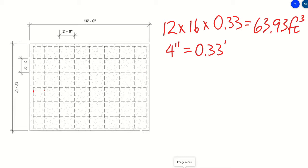The next thing we need to do is convert that into cubic yards. 63.93 cubic feet divided by 27, because there are 27 cubic feet in one cubic yard, and that gives us 2.368 yards cubed.